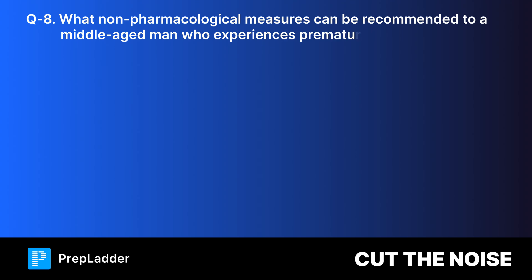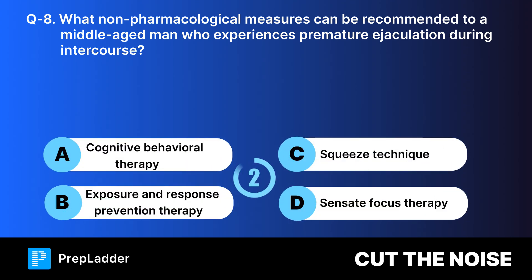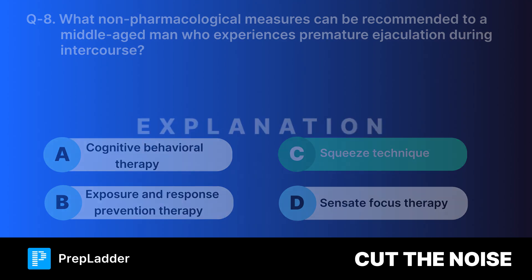Question eight. What non-pharmacological measures can be recommended to a middle-aged man who experiences premature ejaculation during intercourse? Your options are, and the correct answer is squeeze technique. Here's the explanation.